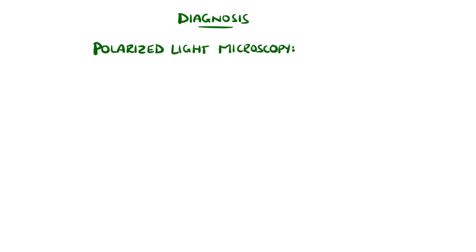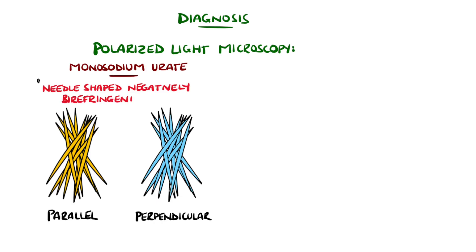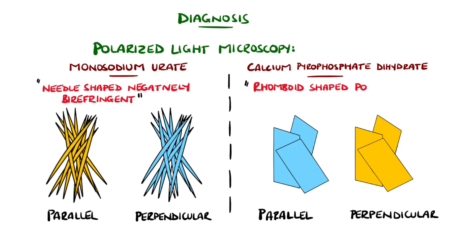Monosodium urate crystals are described as needle-shaped, negatively birefringent crystals, meaning they appear yellow when they are parallel to the red compensator of polarized light, and blue when perpendicular. This is a common exam question, as pseudogout — which clinically can be similar to gout but tends to most commonly affect the knee — features depositions of calcium pyrophosphate dihydrate crystals that are rhomboid shaped and positively birefringent, so they have a blue color when parallel to the red compensator of polarized light, and a yellow color when perpendicular.